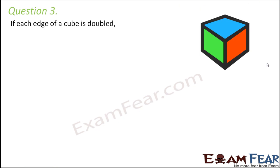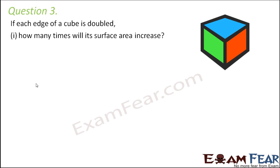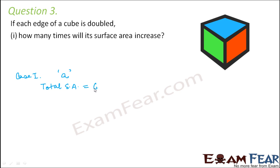Question number 3: If each edge of a cube is doubled, how many times will its surface area increase? In case 1, let each side of the cube be a. The total surface area is 6a².